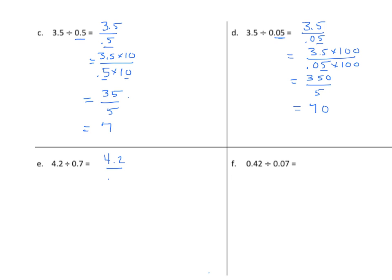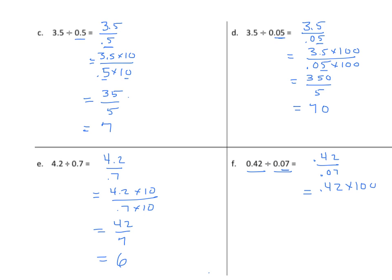Rewriting as a fraction: 4 and 2 tenths over 7 tenths equals 4 and 2 tenths times 10 over 7 tenths times 10. I have 42 for my numerator and 7 for my denominator, and 42 divided by 7 is 6. In the next case, I have 42 hundredths divided by 7 hundredths. Since this is in the hundredths, I multiply both numerator and denominator by 100: 42 hundredths times 100 over 7 hundredths times 100. I end up with 42 divided by 7, which again equals 6.